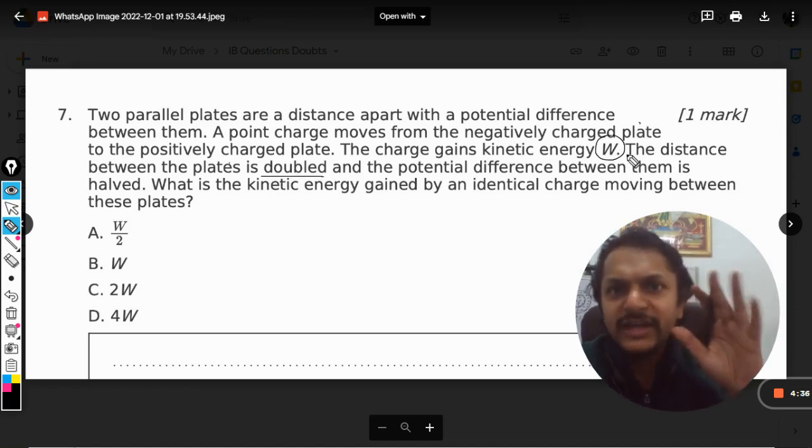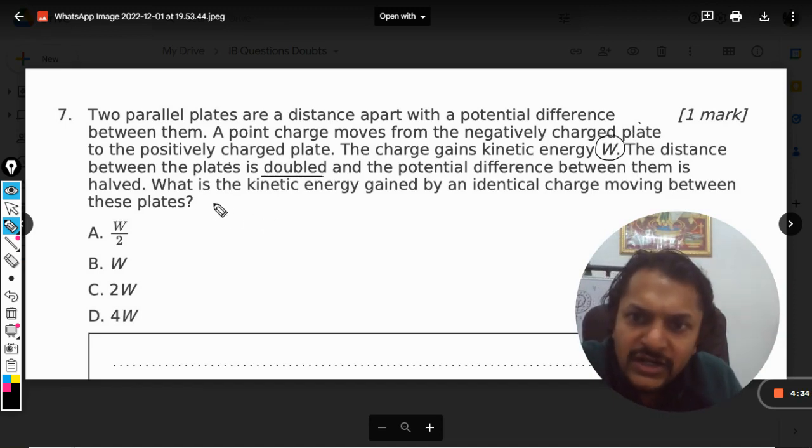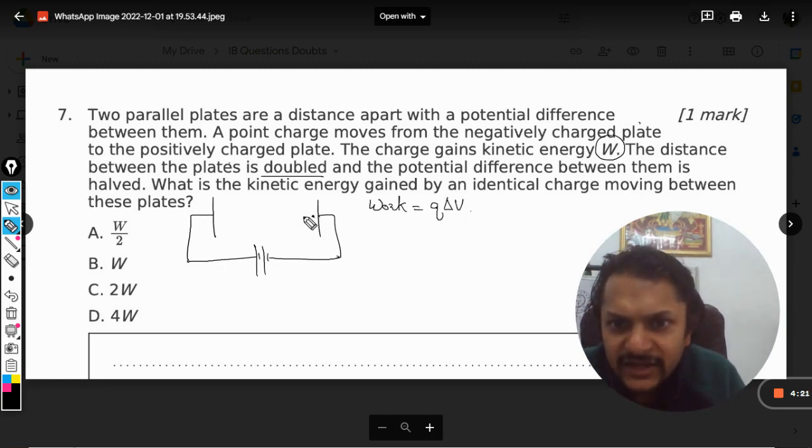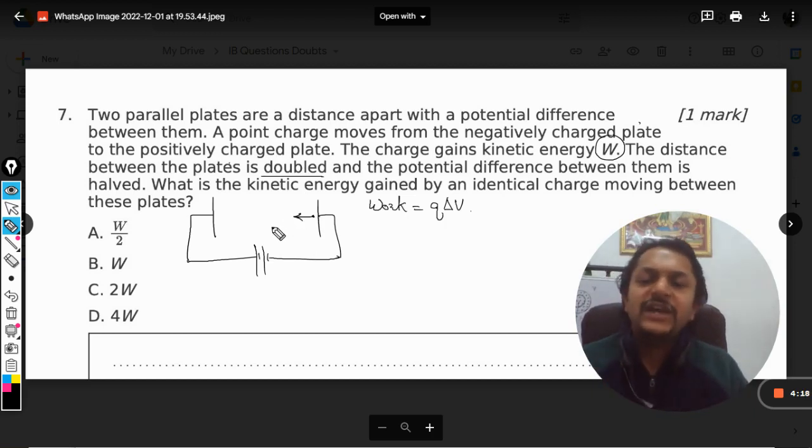So first of all, let's talk about case number one. There are these two plates maintained at some potential difference. The work done, as we know, will be given by q × ΔV. q is the charge that moves between the plates, and ΔV is the potential difference between the two plates. So this is the work done.